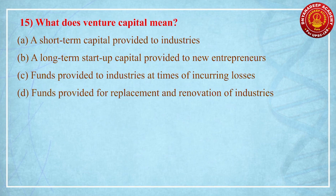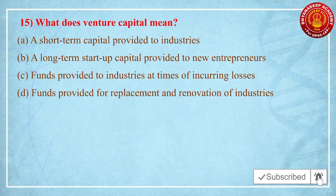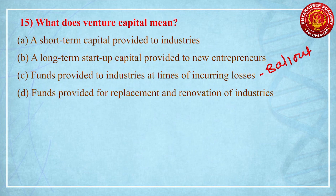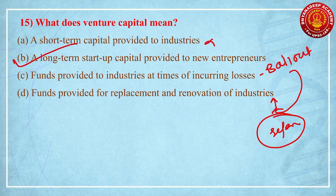Question 5: what does venture capital mean? Options are: a short-term capital provided to industries; a long-term startup capital provided to new entrepreneurs; funds provided to industries at the time of incurring losses; or funds provided for replacement and renovation of industries. Funds provided to industries at the time of incurring losses is called a bailout package. The correct answer is long-term. Startup companies with a potential to grow need investment, so wealthy investors invest capital in such businesses with a long-term growth perspective — this capital is known as venture capital, and the investors are called venture capitalists.